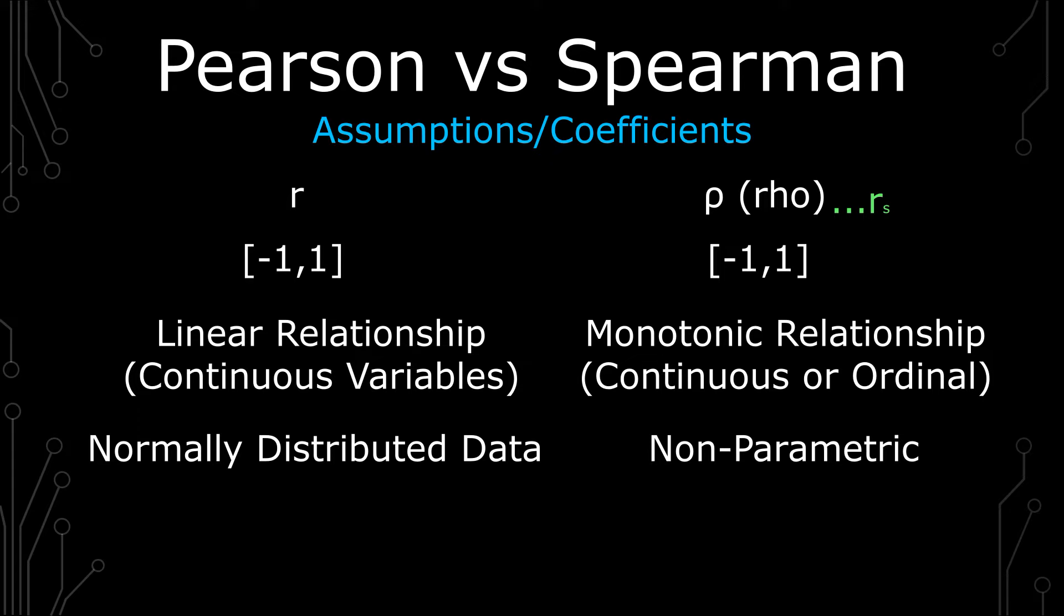For Pearson, it requires homoscedasticity for the error terms. That is that the variability is roughly the same between the independent and dependent variables. For Spearman's, it's important to note that the variables are actually ranked variables. They aren't the variables as they are. So there's a ranking that has to happen before all of this analysis is done.